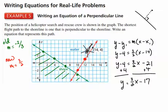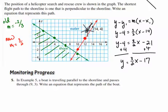All right, let's go on to the second part of this. Now, in the monitoring progress, it says in example 5, which we just looked at, a boat is traveling parallel to the shoreline and passes through the point 9, 3.